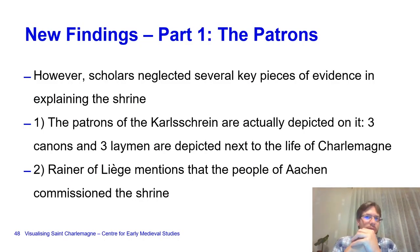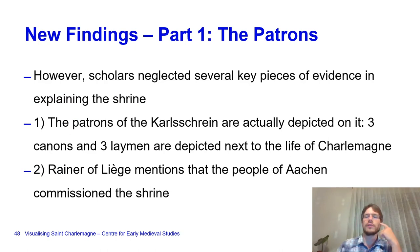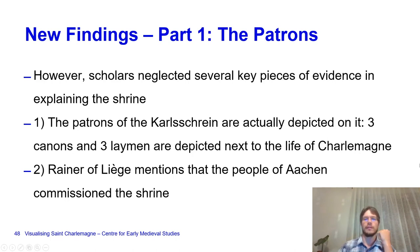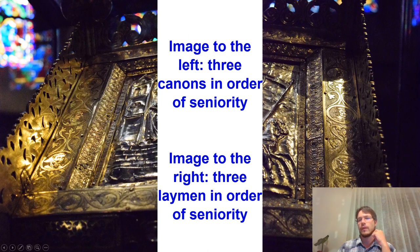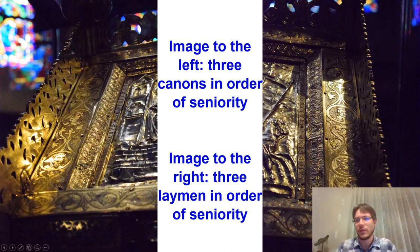Several of my own findings can help resolve some of the problems. First, the patrons of the Karl Shrine are actually depicted on the shrine itself. Three canons and three laymen are depicted next to the life of Charlemagne—the three laymen in order of seniority: the oldest, long-haired and bearded; the middle-aged, bearded with normal hair; and the youngest, beardless.